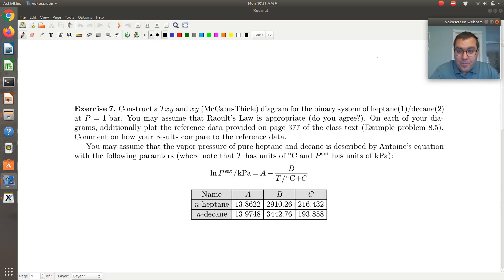All right, exercise 7. We're asked to construct a TXY and XY McCabe-Thiele diagram for the binary system heptane and decane at a pressure of 1 bar. You can assume Raoult's Law is appropriate, and on each of the diagrams, plot the reference data on page 377 from the class text and comment on how your results compare to the reference data. We're told that the vapor pressure of heptane and decane can be described by Antoine's equation with the parameters provided below.